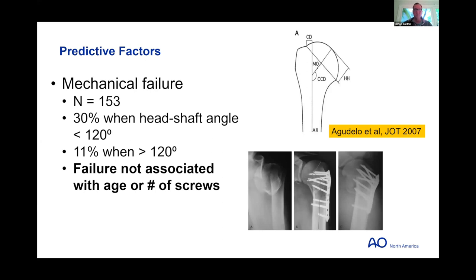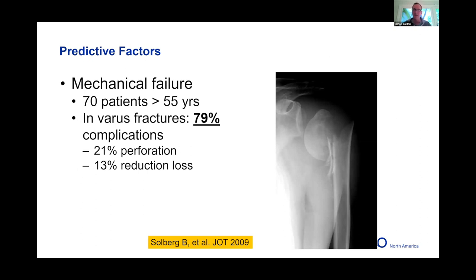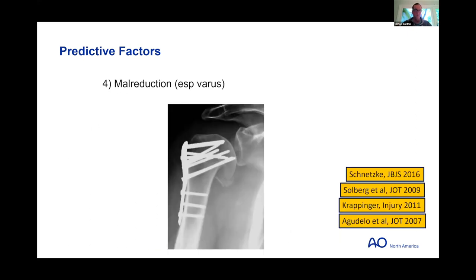A Southern California series of 70 patients over 55, all varus patterns: 79 percent complication rate, double-digit screw perforation and reduction loss. Interestingly, 71 percent of these patients were malreduced — it's kind of buried in the discussion, but they allude to the fact that it's probably harder to get these patients well-reduced in the OR. Malreduction is clearly in the surgeon's control and is a clear predictive factor for failure.